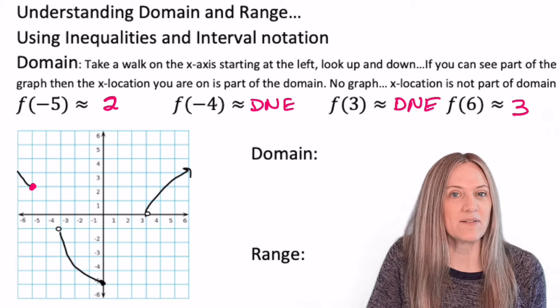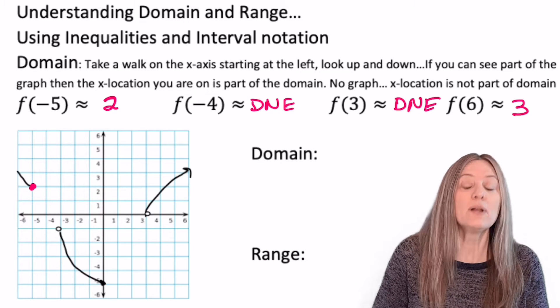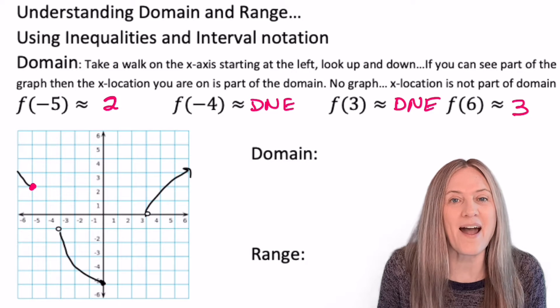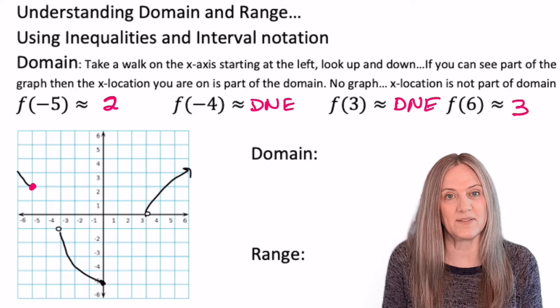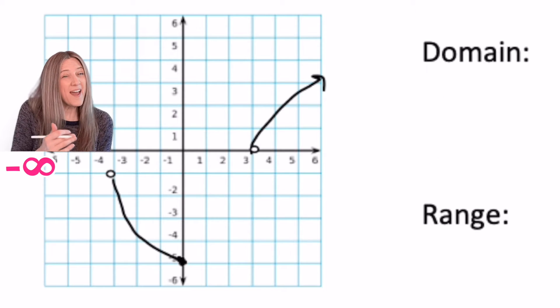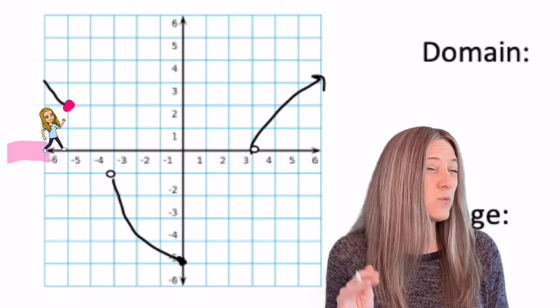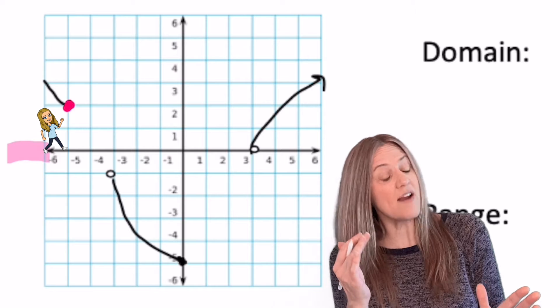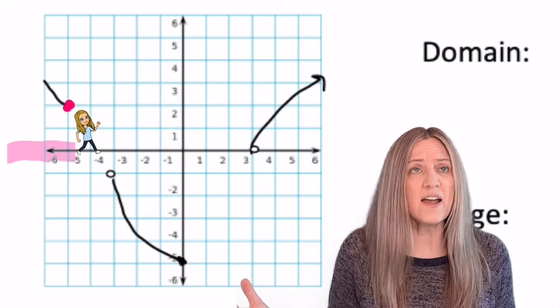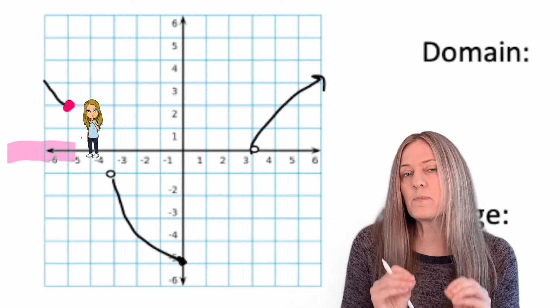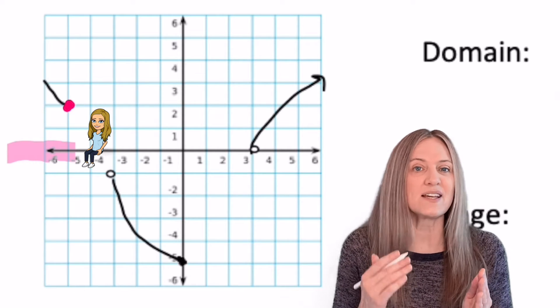Now let's talk domain. Remember domain is the set of input values. So we want to walk along that x-axis, looking up, looking down. If we can see any part of the graph, that x value is part of the domain of the function or relation. So let's start taking a walk on the x-axis. I'll start way to the left at negative infinity and walk along. The first time I see part of the graph is right when I get to negative 6. I look up, there's part of the graph. All right, I keep walking and it seems to go all the way through negative 5. But right after negative 5, I look up, I look down, there's no graph. So let's just pause there for a moment. How would I indicate that I have x values inputs from negative 6 to negative 5?